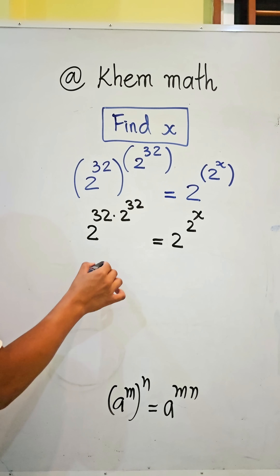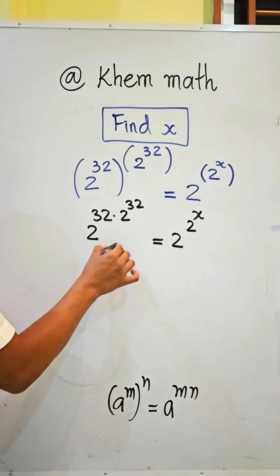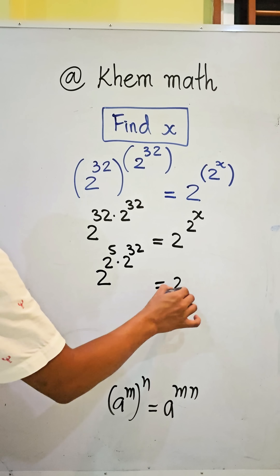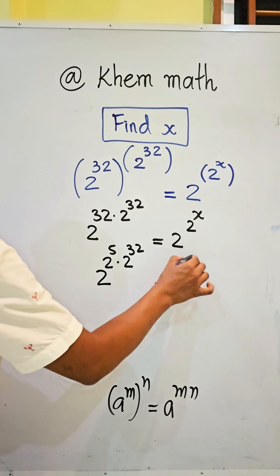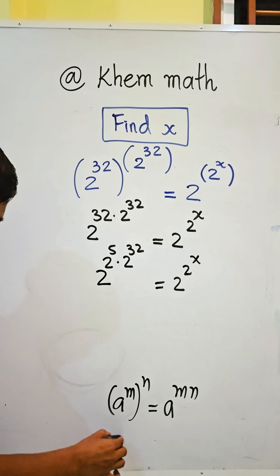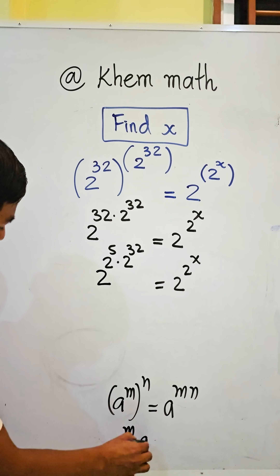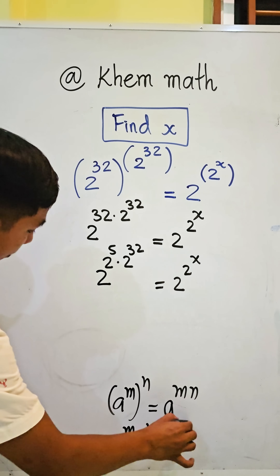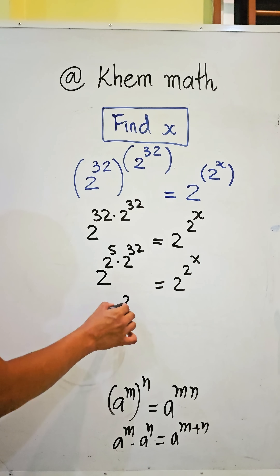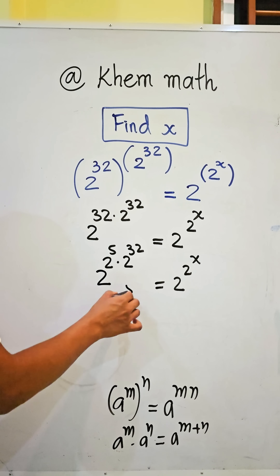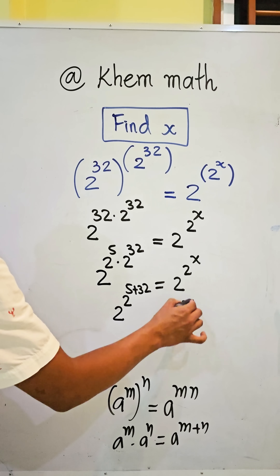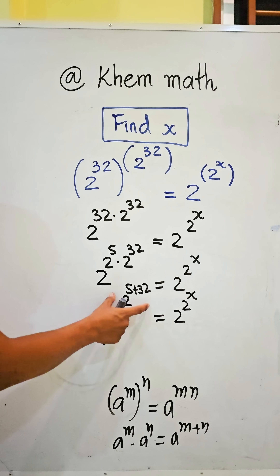Here we see that 32 equals 2 power 5. So we get 2 power (2^5) times 2 power 32 equal to 2 power 2 power 8. Now we use the formula a^m times a^n equals a^(m plus n).